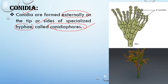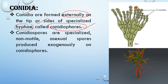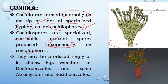As seen in this picture, the conidiophore bears special branches, and at the tip of these branches there are conidia which produce conidiospores. These conidiospores are specialized non-motile asexual spores — they are aplanospores produced exogenously on the conidiophore. They may be produced singly or in chains, for example in members of Deuteromycetes.